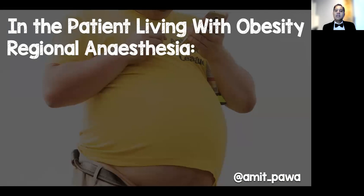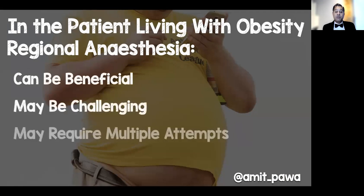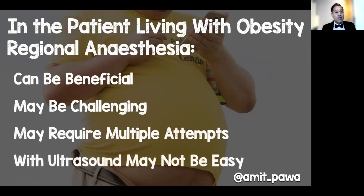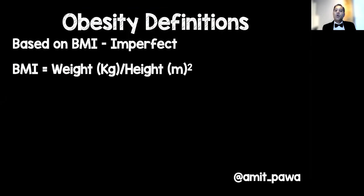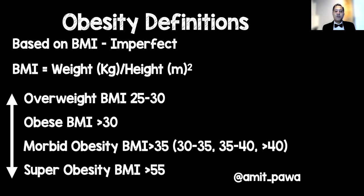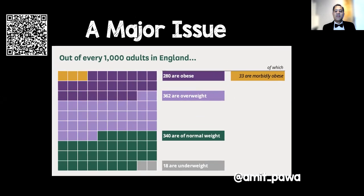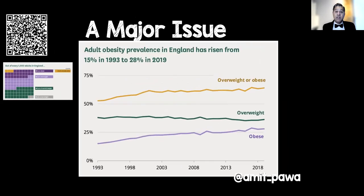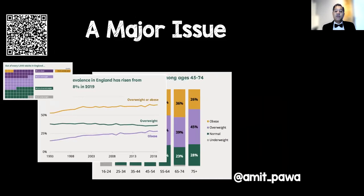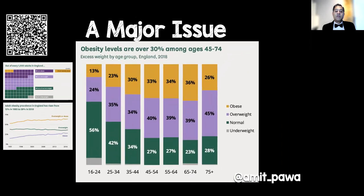For the patient living with obesity, regional anaesthesia may be beneficial. It certainly can be challenging to perform and may require multiple attempts, and when you use ultrasound it may not necessarily be easy. Obesity definitions represent a spectrum from overweight to super obesity. This is a major issue — in England a greater proportion of our population are obese and morbidly obese, and in the 45–74 age group over 30% of the English population are obese.